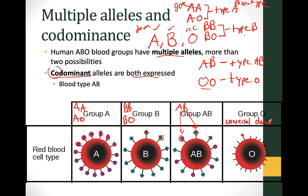Type O blood can give to any other group, making it the universal donor. Type AB blood can receive from anybody, making AB the universal recipient.